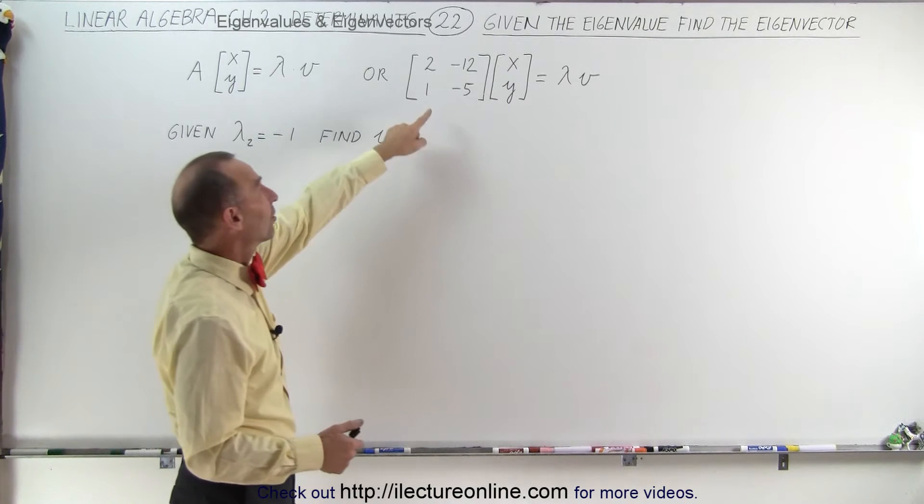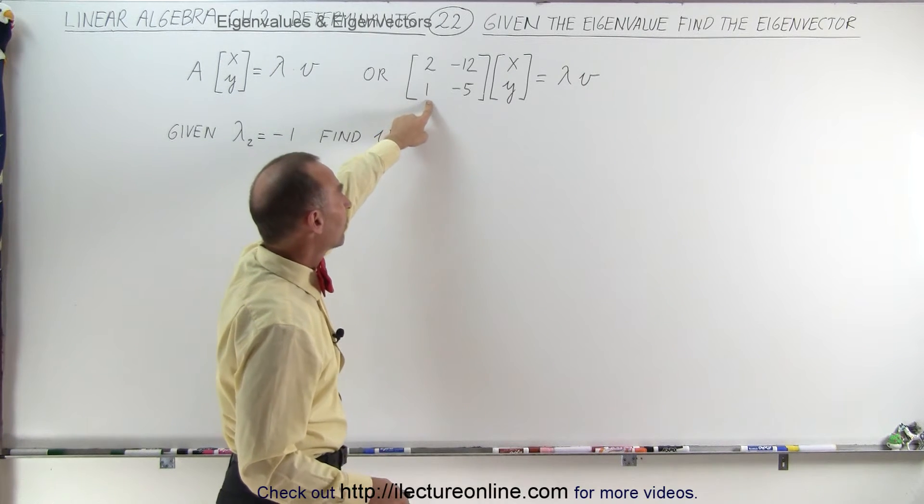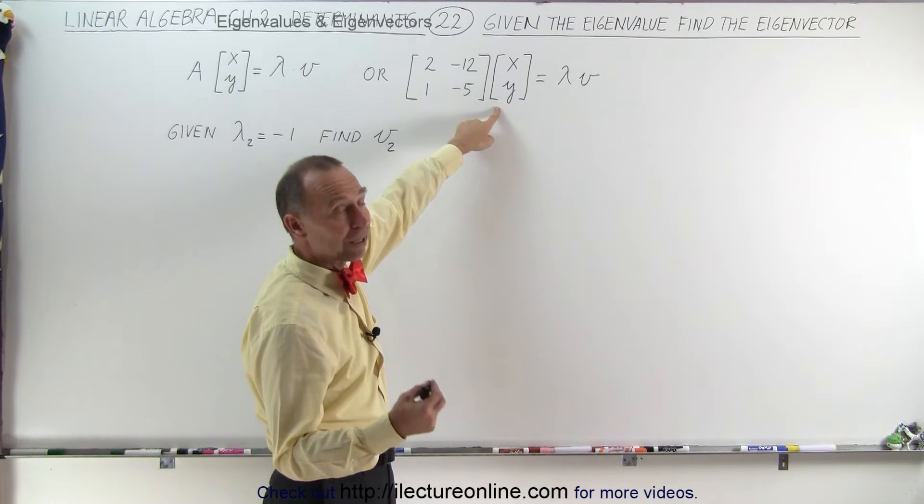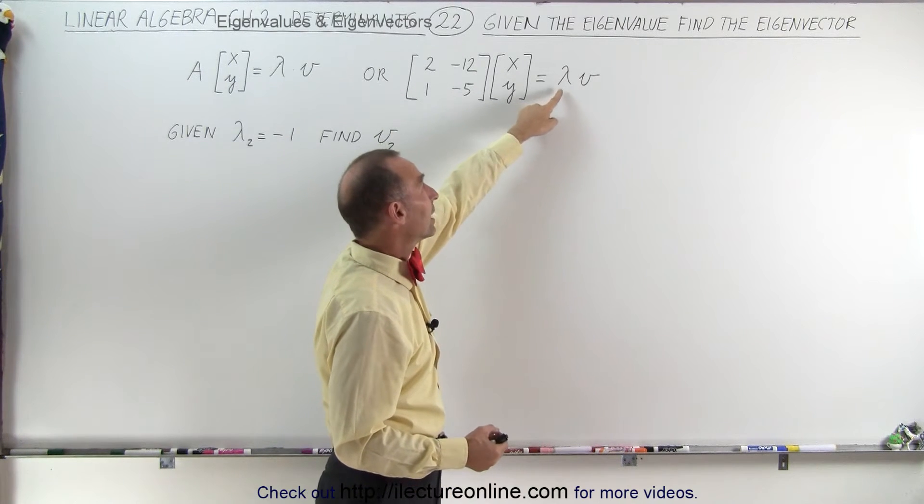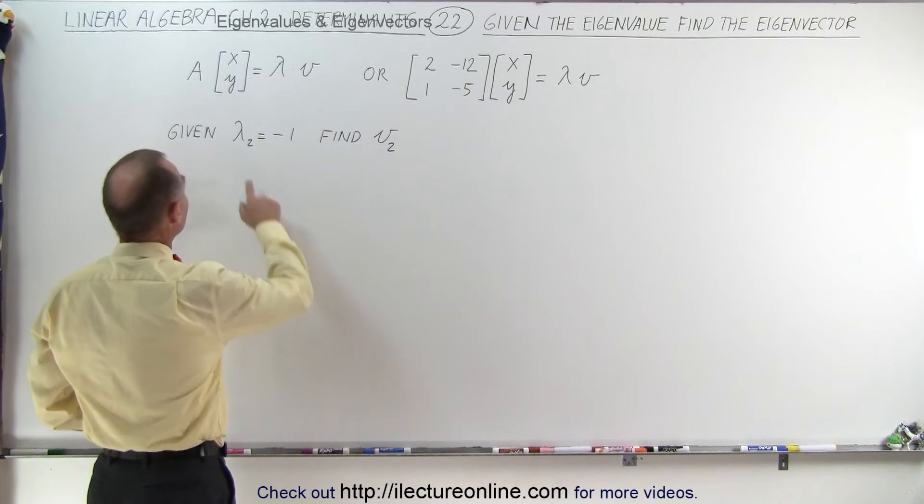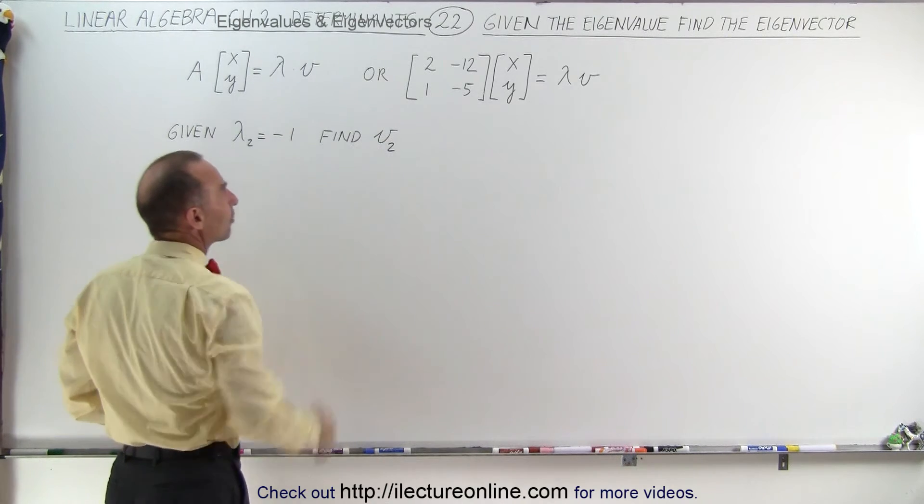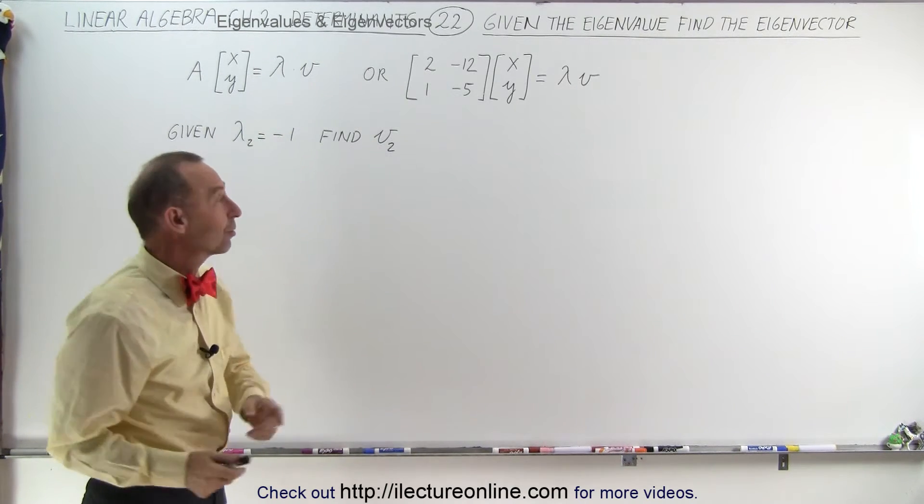In the previous video we used this as an example, the 2 by 2 matrix. We call this matrix A. If we multiply that times the unknown eigenvector, that is equal to the eigenvalue with the corresponding eigenvector. So in this case, if we're given that the eigenvalue is equal to minus 1, let's find the corresponding eigenvector using this approximation method.